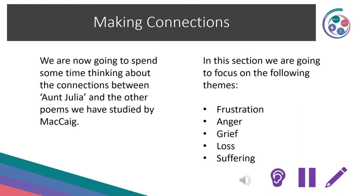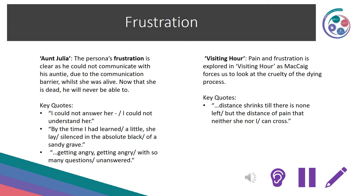Making connections: we are now going to focus on the themes of frustration, anger, grief, loss and suffering. The theme of frustration: in Aunt Julia, the persona's frustration is clear as he could not communicate with his auntie due to the language barrier while she was alive, and now that she's dead he will never be able to. Key quotes: 'I could not answer her, I could not understand her', 'By the time I had learned a little, she lay silenced in the absolute black of a sandy grave', and 'getting angry, with so many questions unanswered.' In Visiting Hour, pain and frustration is explored as McCaig forces us to look at the cruelty of the dying process: 'distance shrinks till there is none left, but the distance of pain that neither she nor I can cross.'